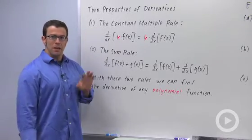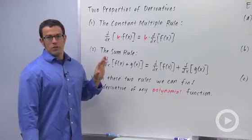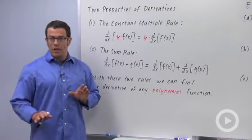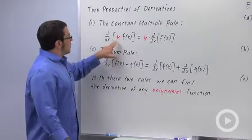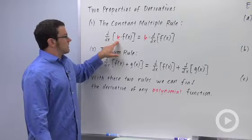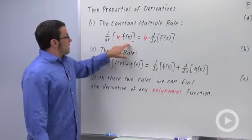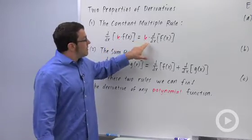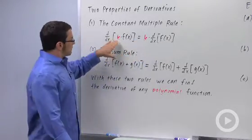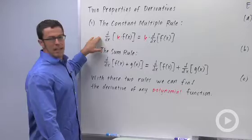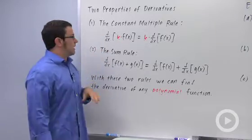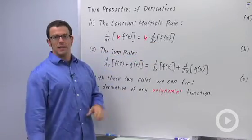First, the constant multiple rule. Here's how it works. Let's say that you have a function f(x) and you know how to differentiate it. If you have a constant in front of it, like say it's 5, 5 times f(x), the derivative of that is going to be 5 times the derivative of f(x). Effectively, you can move that constant outside of the derivative and just take the derivative of the inside function f(x).